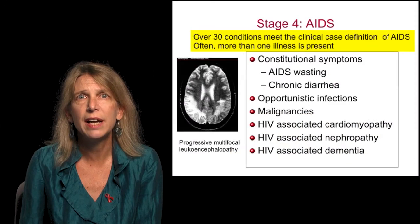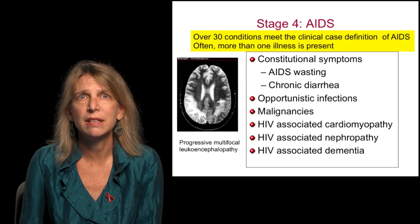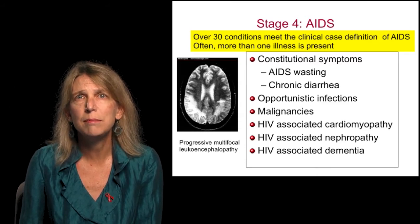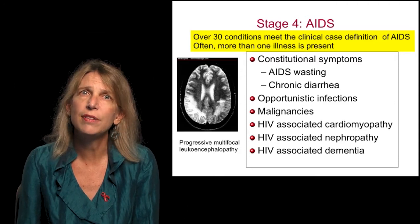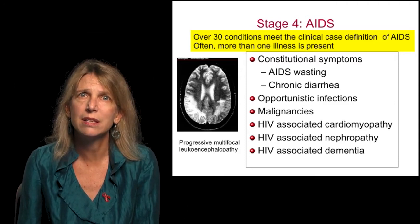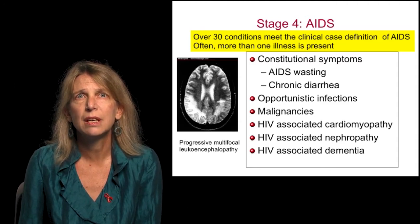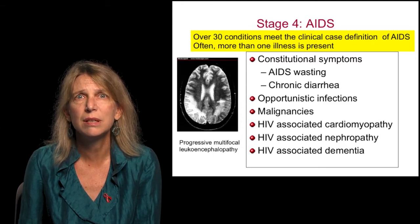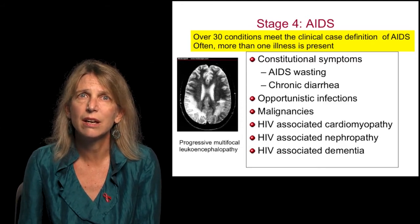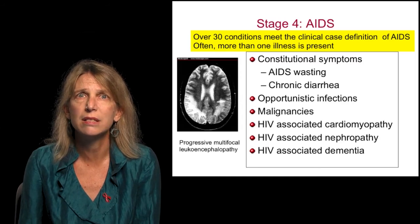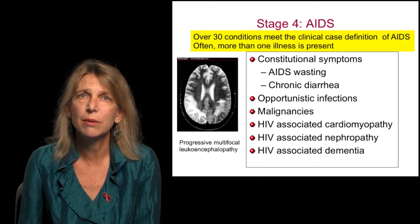Stage 4 is the final stage of HIV infection and is the name of AIDS. There are over 30 conditions that meet the clinical case definition of AIDS, and often more than one illness is present. These can be categorized into various groups, including AIDS-defining conditions that are constitutional symptoms, such as AIDS-wasting, characterized by profound weight loss, and chronic diarrhea in the absence of an identifiable pathogen.